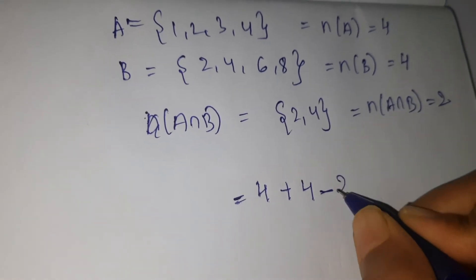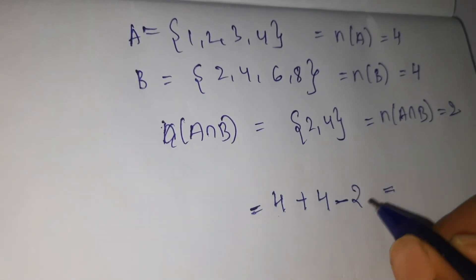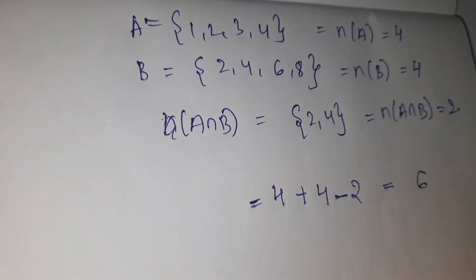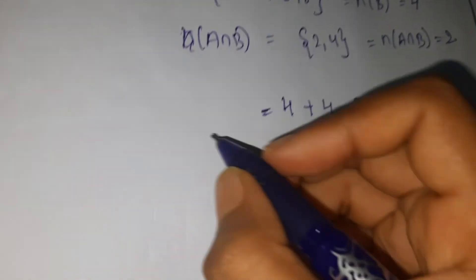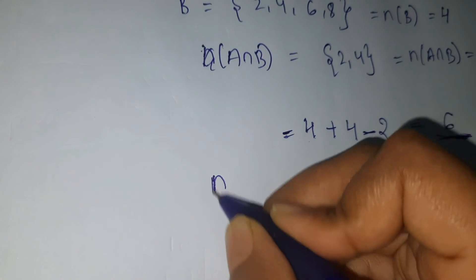That equals 8 minus 2 is 6. So we should get n(A union B) is 6. Now let's verify if we'll get 6 or not. A union B—we have the elements here, see.